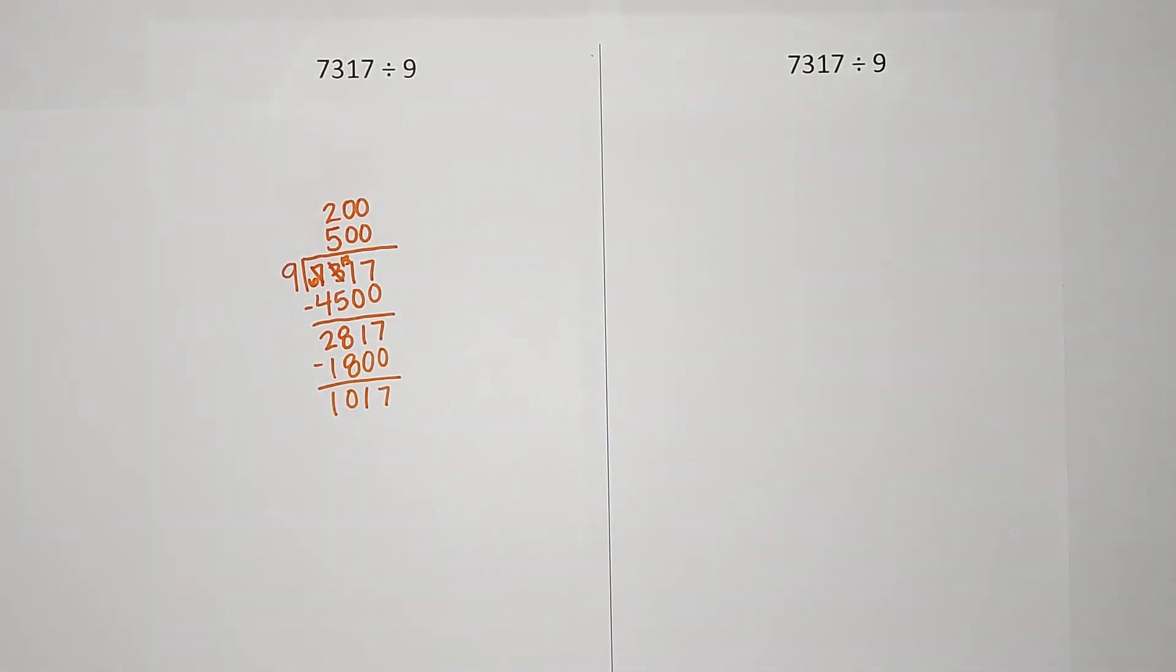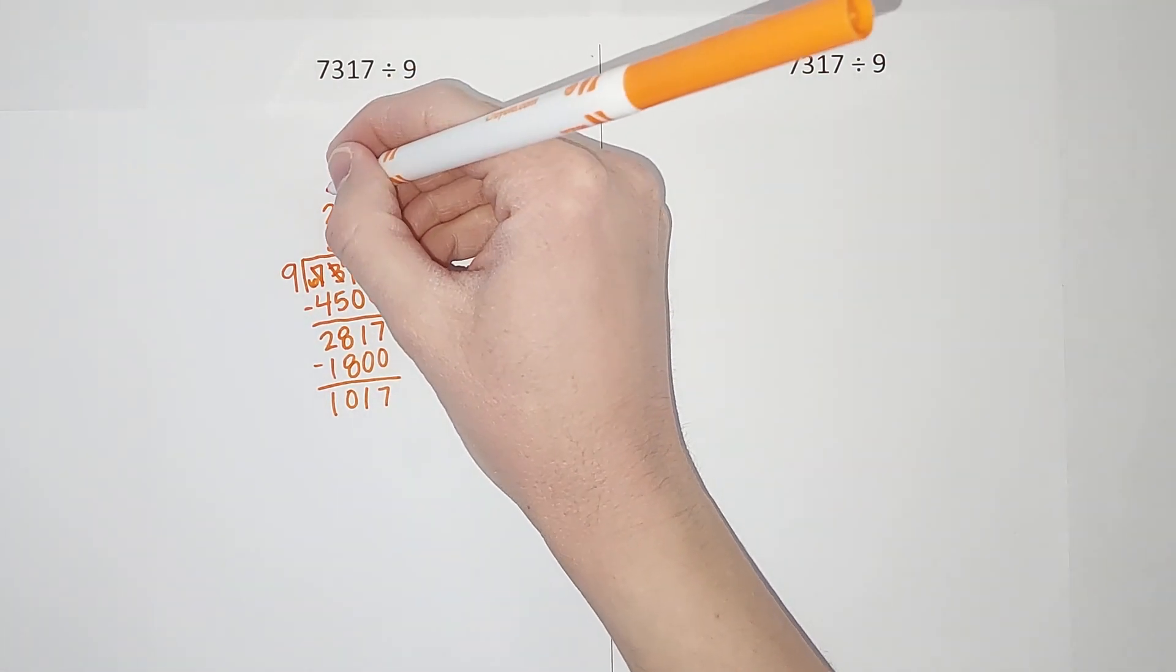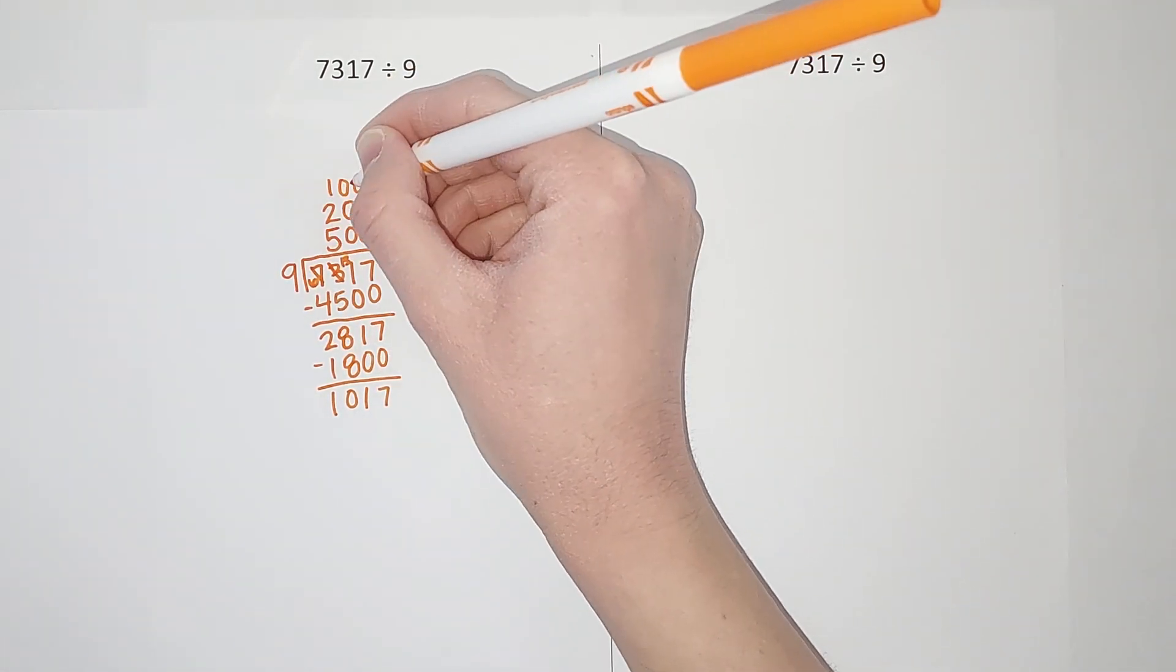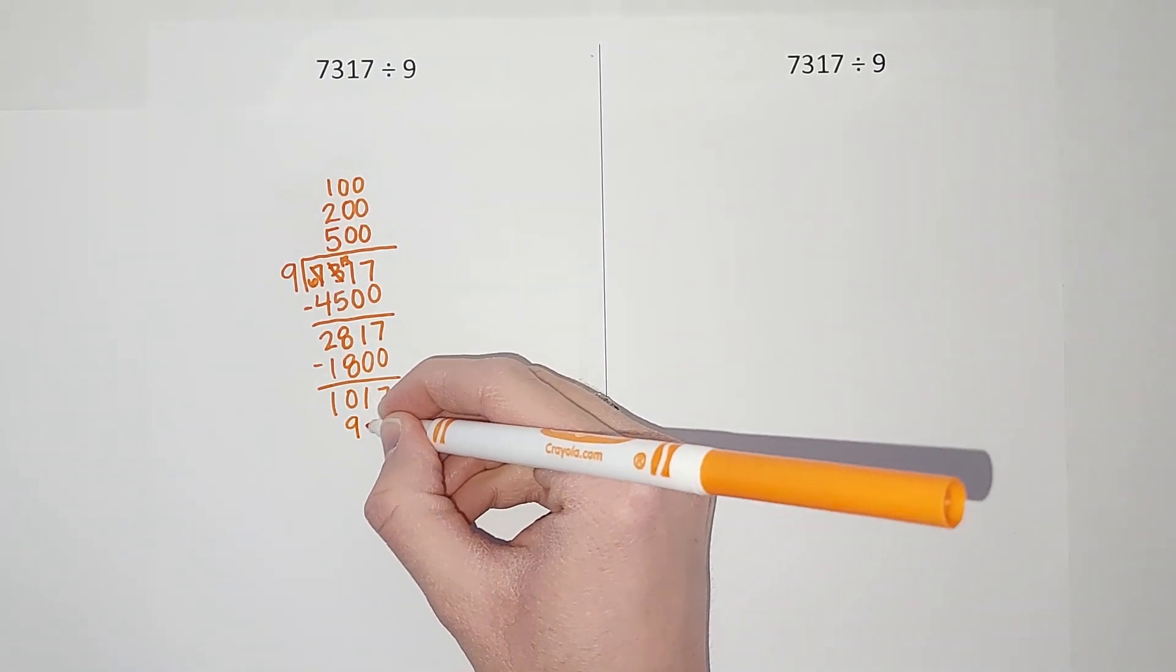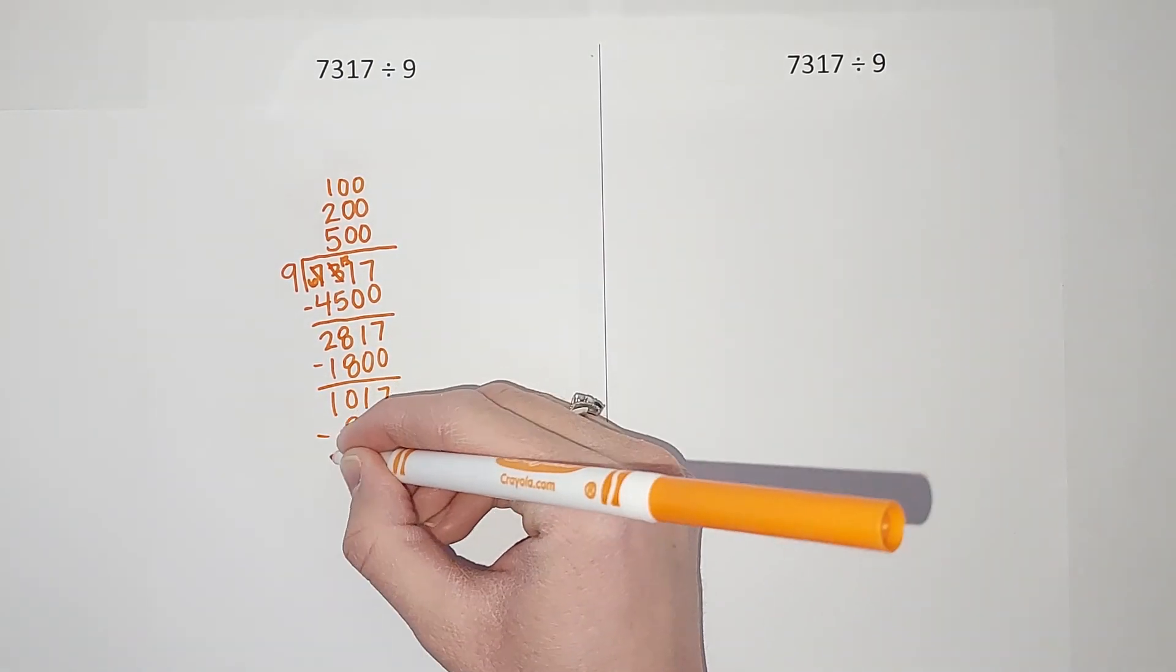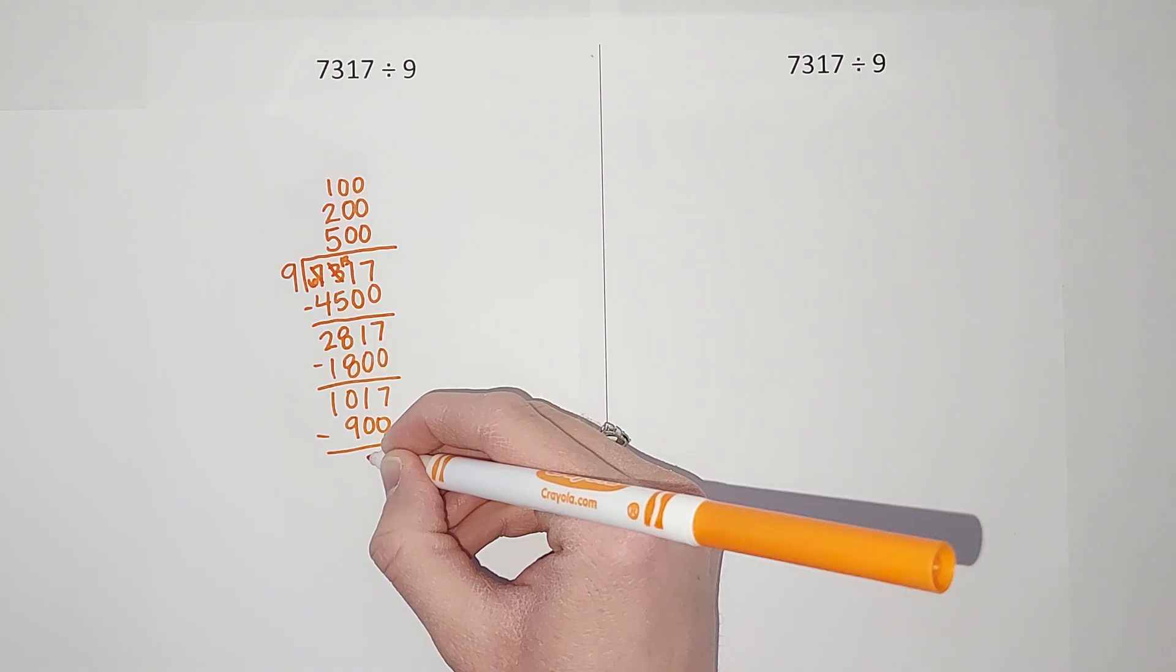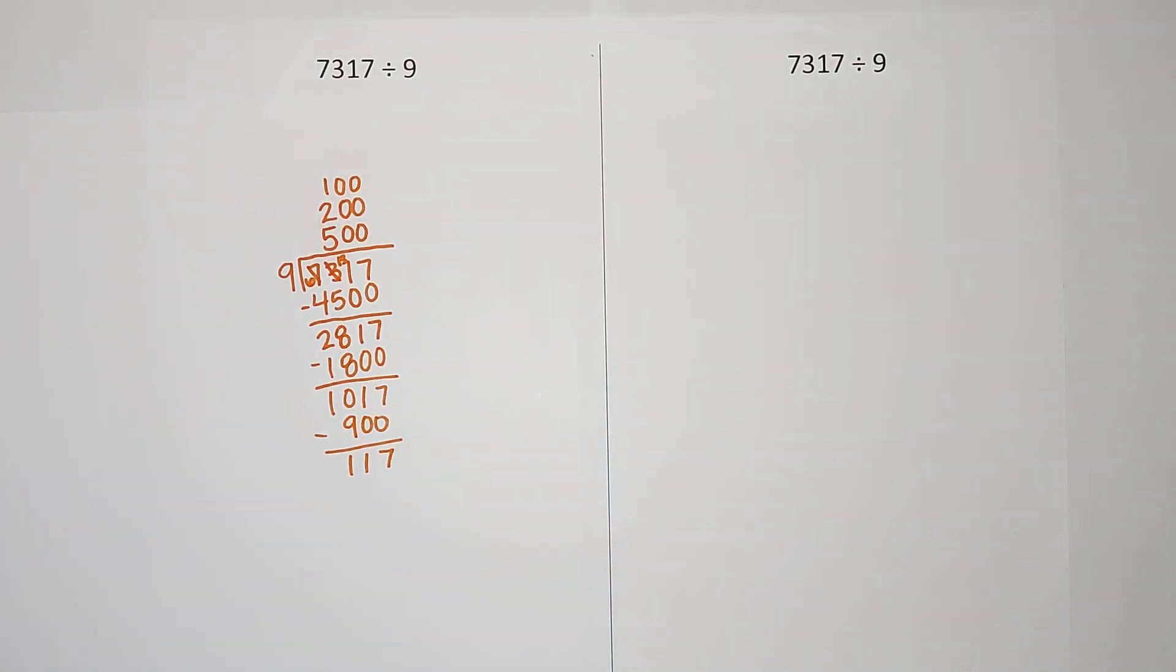So 200 times 9 gives me 1800. I'm subtracting that off and I'm left with 1017. That's when I'm like, okay, that's pretty close to 900, so I'm gonna take off 100 groups of 9. So 100 times 9 gives me that 900 again. Subtract and I'm left with 117.